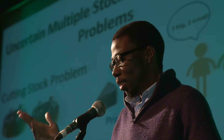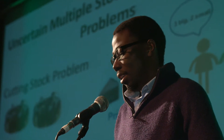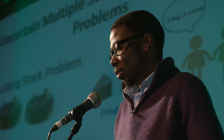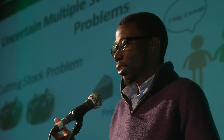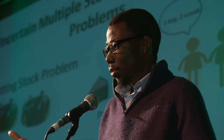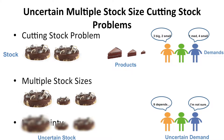When we have multiple stock sizes, it means the cakes aren't all the same size, which makes solving the problem harder. When you add uncertainty on top of that — whether in the number of stock you have or in the demand — it becomes an even more difficult problem to solve.